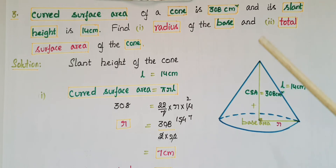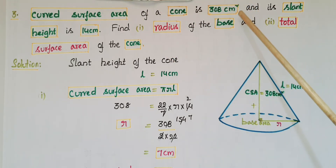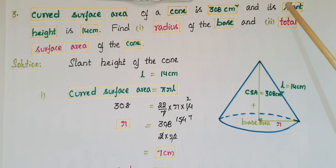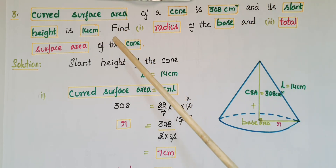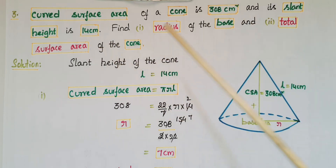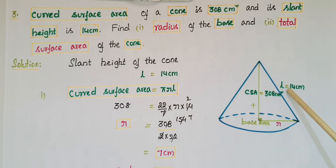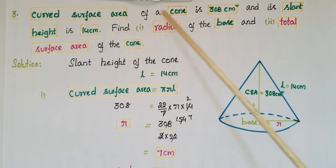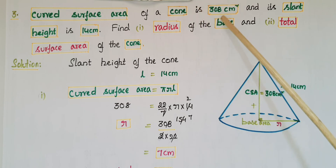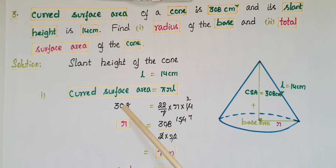This is the third problem: the curved surface area of a cone is 308 centimeter square and its slant height is 14 centimeters. Find first the radius of the base and second the total surface area of the cone. Here, slant height l equals 14 centimeters and curved surface area equals 308 cm². Curved surface area equals π r l.